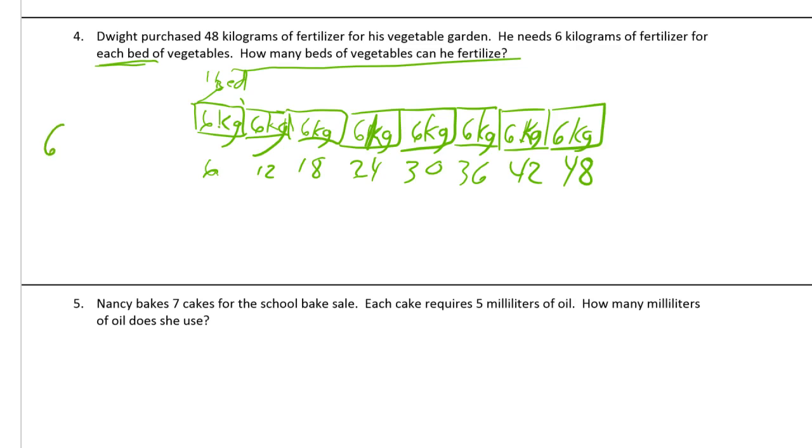Now you could write your number sentence. Either you could write multiplication, it would be 6 times something equals 48, or you could write 48 divided by 6 equals. So you know what the answer is now. How many beds are there? There's 1, 2, 3, 4, 5, 6, 7, 8. It took 8. So this is going to be an 8, and that's going to be an 8. He can fertilize 8 beds.